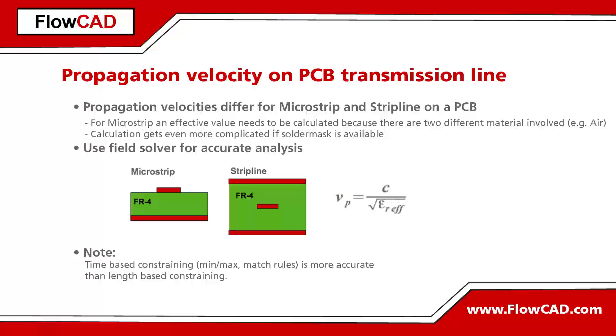In other words, signals on microstrip always travel faster. This should be considered while defining PCB constraints.